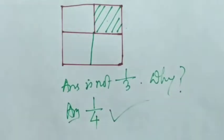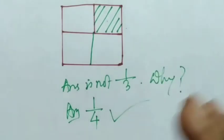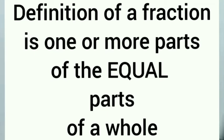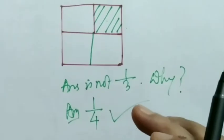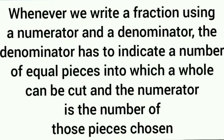So what have we found from this? More precisely, the definition of a fraction is one or more of the equal parts of a whole. Yes, equal parts of a whole. That means whenever we write a fraction using a numerator and a denominator, the denominator has to indicate a number of equal pieces into which a whole can be cut, and the numerator is the number of those pieces chosen.